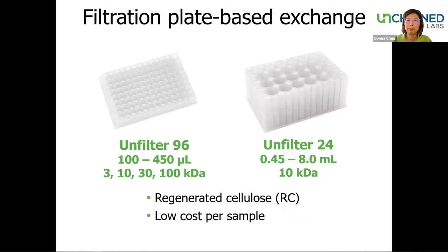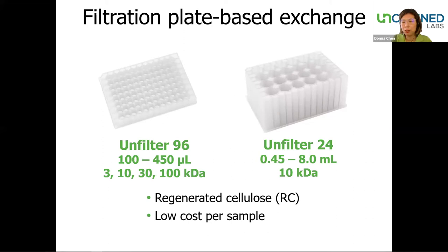Big Tuna is a filtration plate-based buffer exchange system. It uses two consumables: Unfiltered 96 and Unfiltered 24. Both are made with regenerative cellulose membrane and are in SBS standard format, so they're compatible with automation instruments. Unfiltered 96 is a 96-well plate with a volume input of 100 to 400 microliters and four molecular weight cutoff options ranging from 3 kDa to 100 kDa. The Unfiltered 24 is a 24-well format plate with sample input volume from 450 microliters to 1 mL, with a 10 kDa cutoff option.